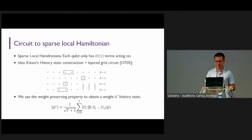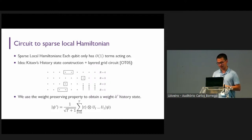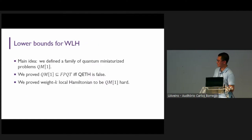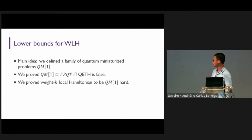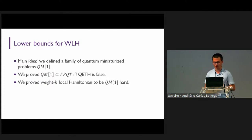We require the circuit to be weight-preserving because in Kitaev's history state construction, to obtain a constant-weight witness, we require all components to have the same weight. So with a weight-preserving circuit, we can preserve this weight. For the lower bounds, the main idea is that we define a quantum miniaturized problem QM[1], and we prove that QM[1] is in FPQT if and only if the quantum exponential time hypothesis is false. Combining these two results, we obtain that the weighted local Hamiltonian problem cannot be in FPQT unless the quantum exponential time hypothesis is false.